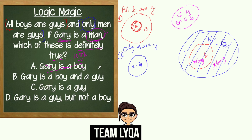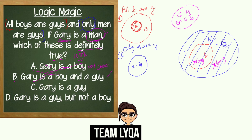Many of you answered Letter B: 'Gary is a boy and a guy.' Gary is definitely a guy, yes — because no matter where he is placed in the diagram, he is inside the bigger G circle. But Gary being a boy is not sure. So since this part is not 100% sure, the entire statement is only partially true, not 100% true.